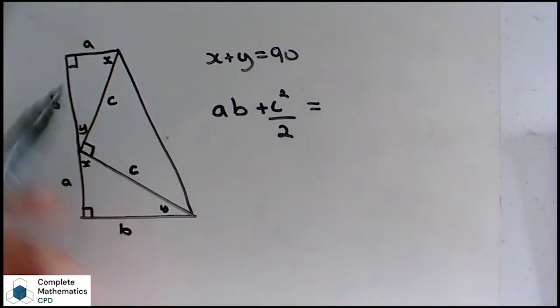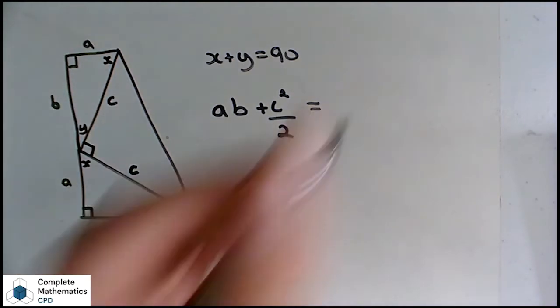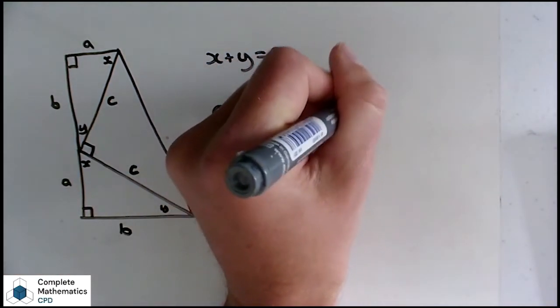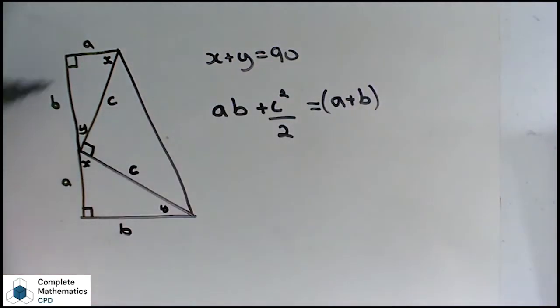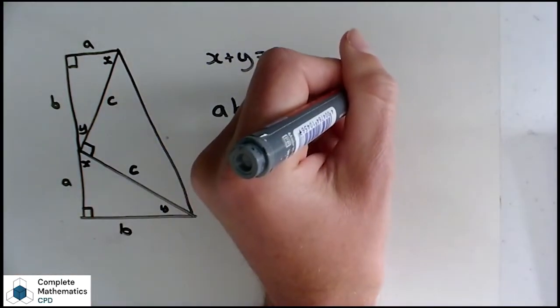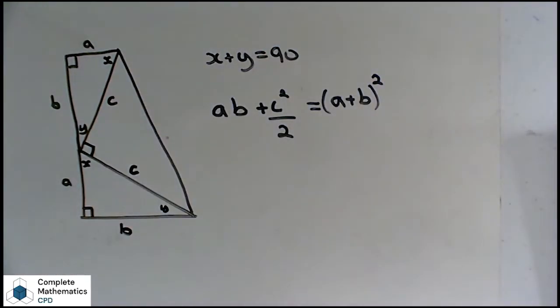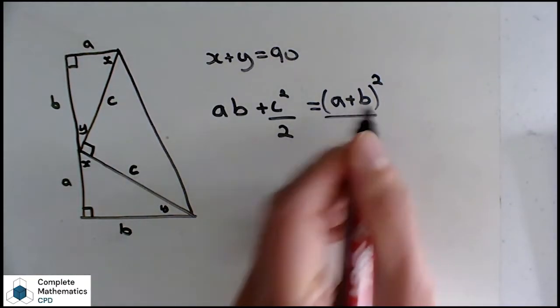So we know that the area of the trapezium, which will be equal to the area of these three triangles, will be A plus B, the parallel sides, multiplied by the height, which just so happens to be A plus B as well, and then we divide it by 2.